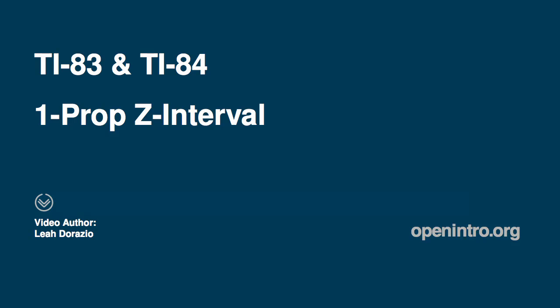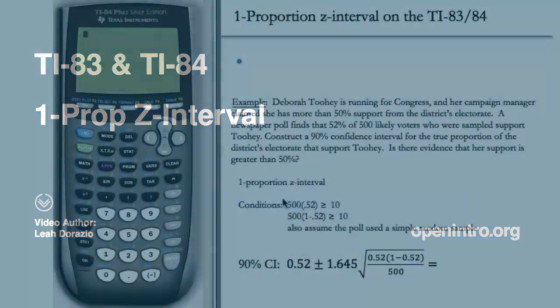In this video we'll see how to carry out the one proportion Z confidence interval for the TI-83 and 84. The instructions for the two calculators are identical.